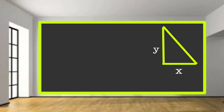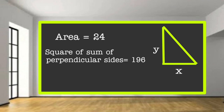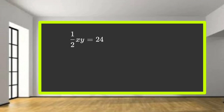We have a right triangle. The area of the right triangle is 24 cm². So, half x times y is equal to 24 cm², which means xy is equal to 48.